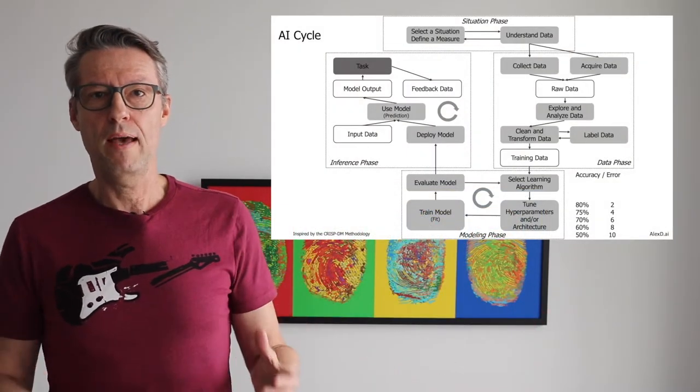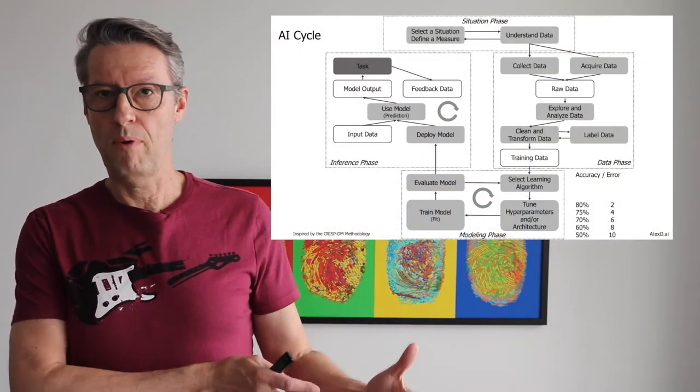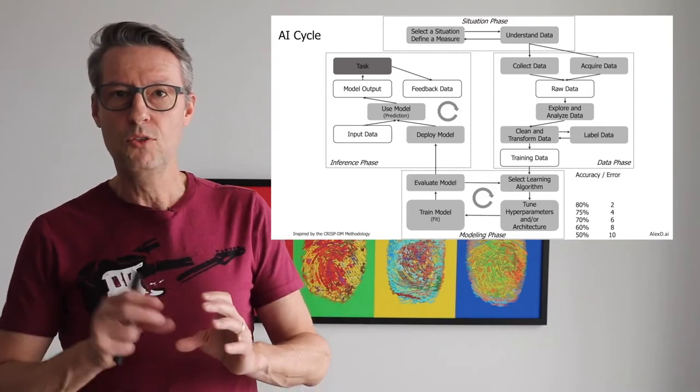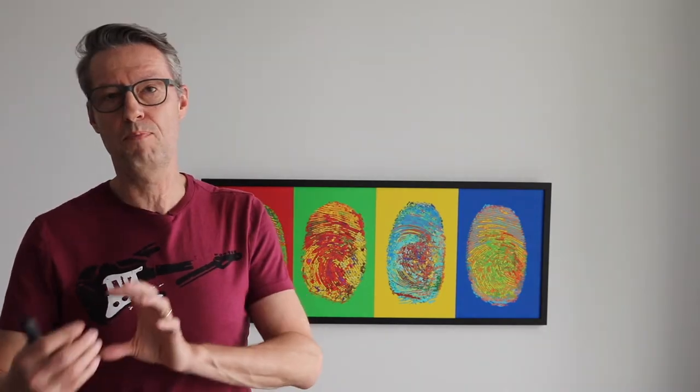But assuming that you are using new data — data that you have never seen as input — but with the same distribution, you will get a result, an output result. And that result you will pass to the task. You probably remember when I explained that you use machine learning during tasks — for recognition, to predict, to generate — and it's part of bigger tasks and bigger processes.